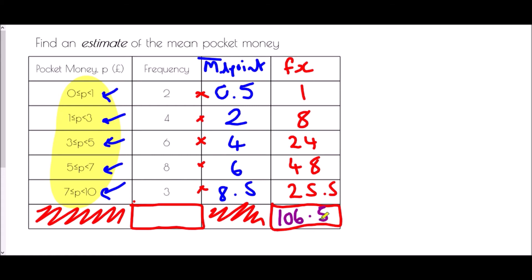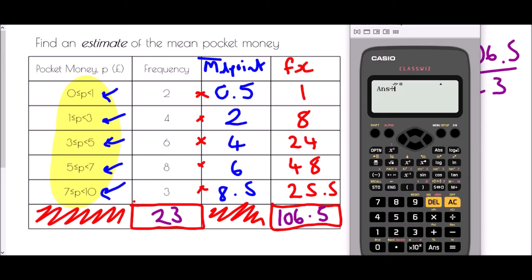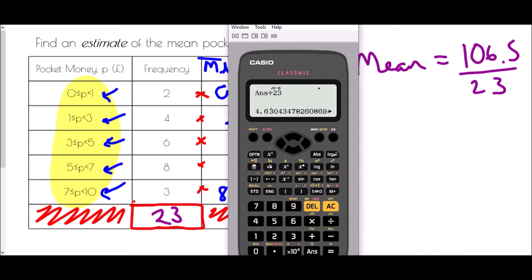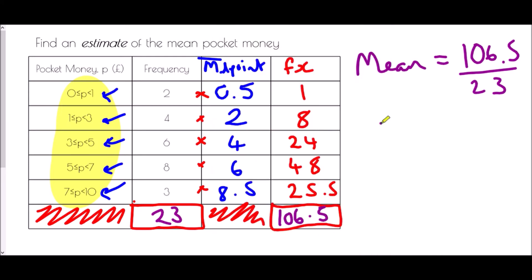Adding the fx values: 1 plus 8 plus 24 plus 48 plus 25.5 equals 106.5. The total frequency is 23. So the estimate of the mean is 106.5 divided by 23, which gives 4.63 — and since we're dealing with money, the best answer is four pounds 63.